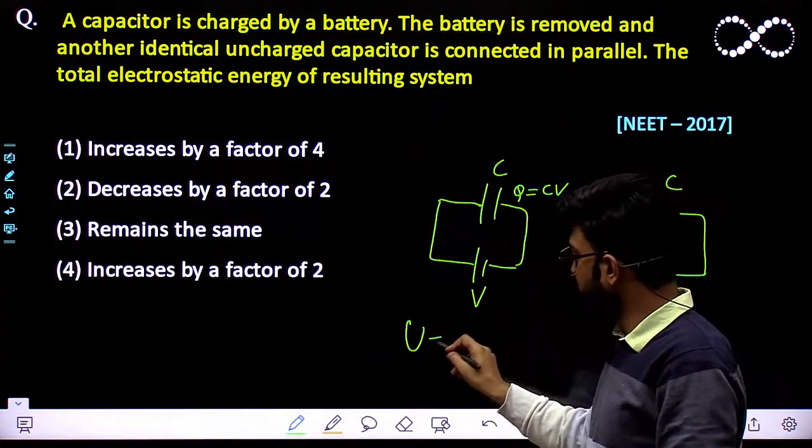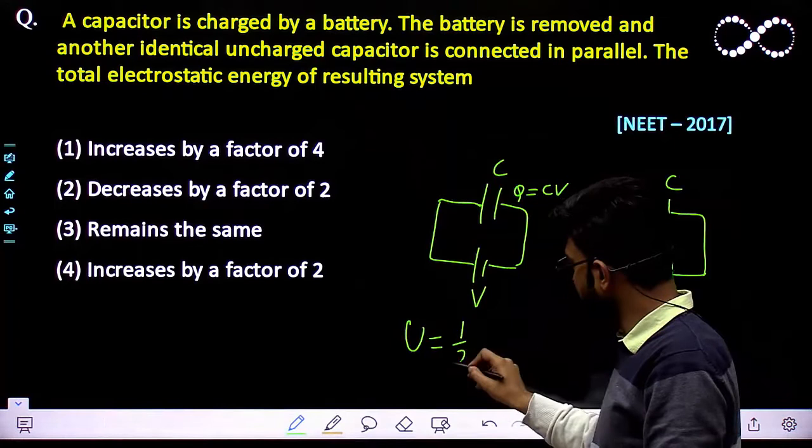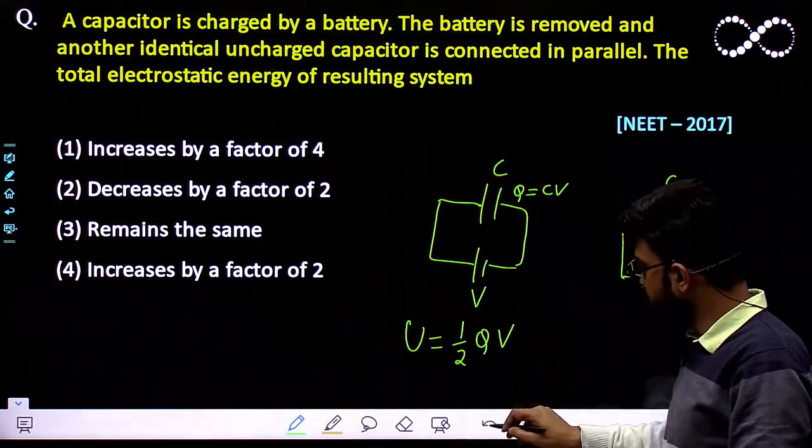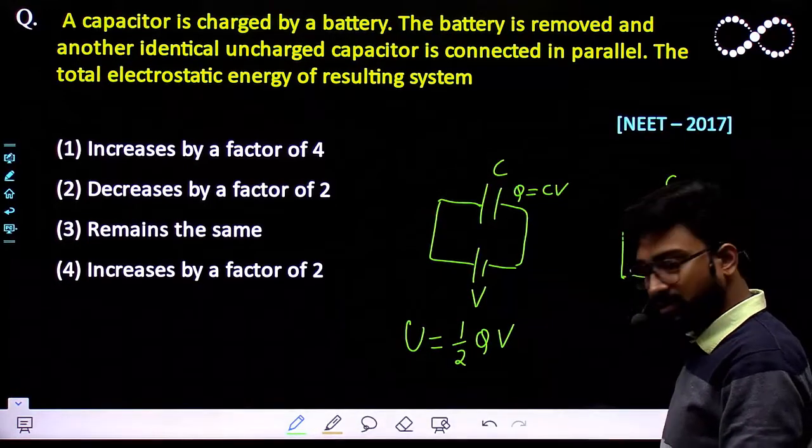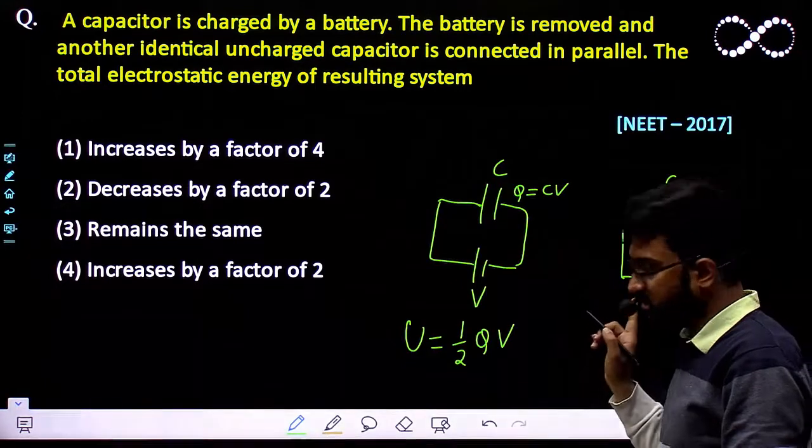Here the energy is given by the relationship: energy equals 1/2 Q times V. So this is the relationship of energy possessed in system 1.